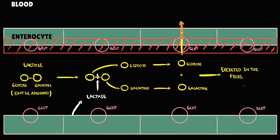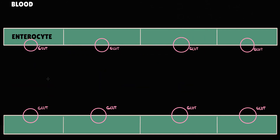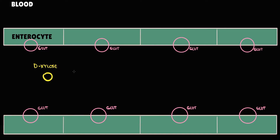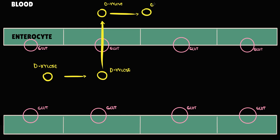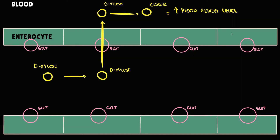So how do we tell where the problem is? We have to decide: is it a problem with enzymes, or is it a problem with absorption due to damage to enterocytes? To solve this, we give the patient a simple monosaccharide — D-xylose. Because it's a monosaccharide, we do not need enzymes; we only need GLUT transporters on enterocytes. The GLUT transporter transports D-xylose into the bloodstream, where it is converted into glucose, causing blood glucose level to increase. So if everything works fine, intake of D-xylose causes an increase in blood glucose level.